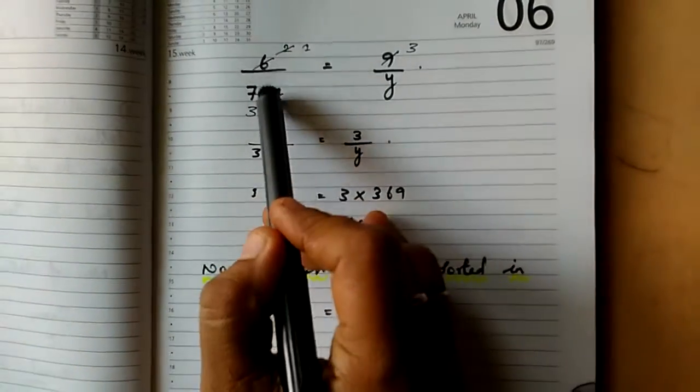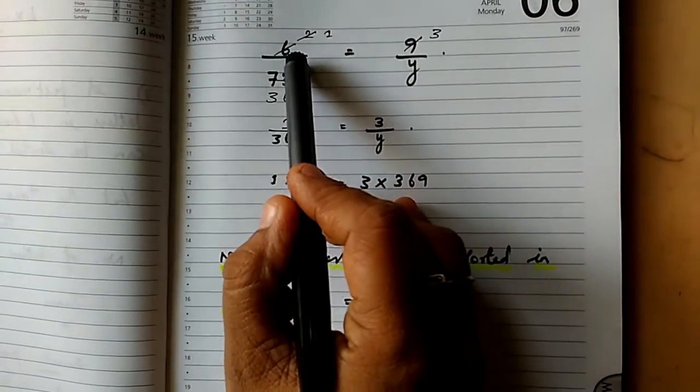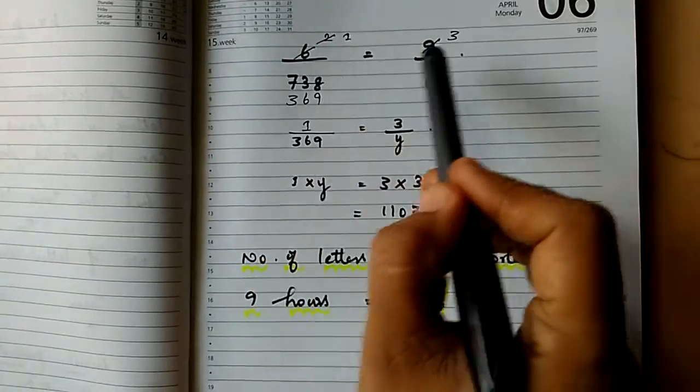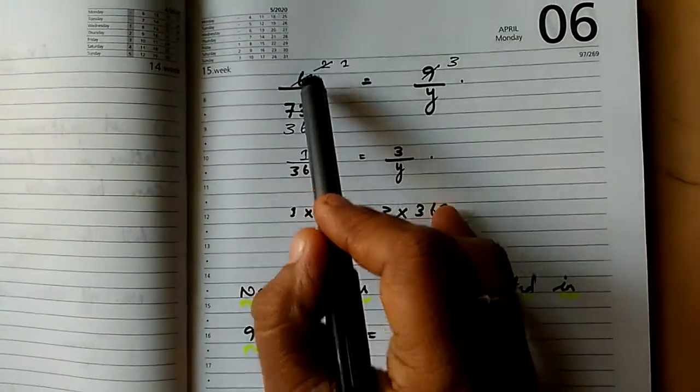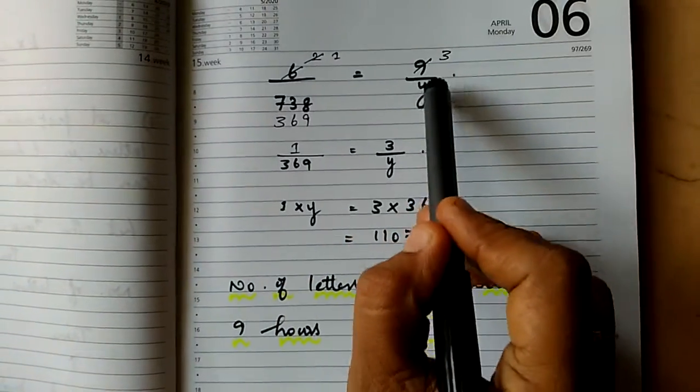So next, 6 by 738. 6 is 6 hours with this many letters sorted. In 9 hours, how many letters are sorted? That's what they're asking. So 6 by 738 equal to 9 by y.